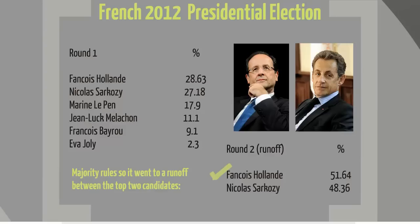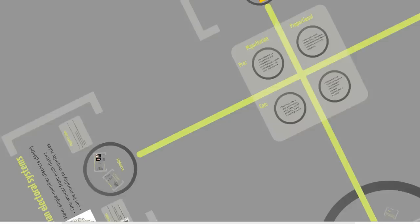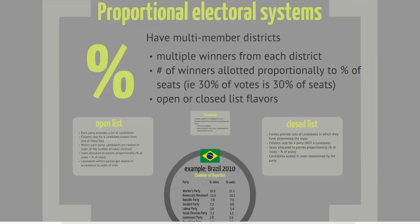Now let's switch it up and look at how proportional electoral systems work. In these systems, there are also electoral districts, but there are multiple members elected from each district. One district might send 10, 20, or 100 representatives to the legislature. In fact, some countries are just one big electoral district. The number of representatives from each party is determined proportionally — each party will send about the same percentage of representatives to the legislature as the percentage of the vote it won. So if you get 20% of the vote, you'll get 20% of the seats.